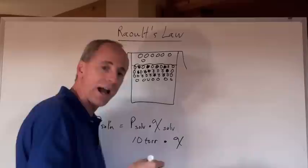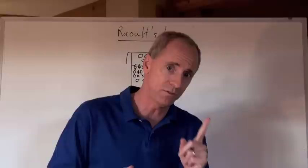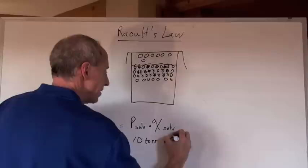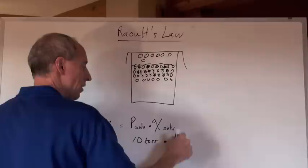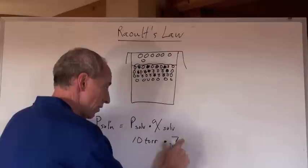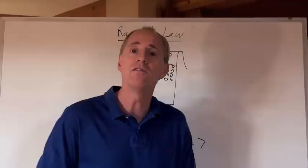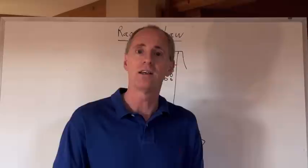Times the chi or the mole fraction of the solvent, not the mole fraction of the solute, but of the solvent. And remember, the mole fraction that I just gave you of the solvent here was that there was 7 molecules of solvent for every 10 total that was here, 70% of it was going to be still solvent. 70% of 10 is 7 and 7 becomes the new pressure of the solution.